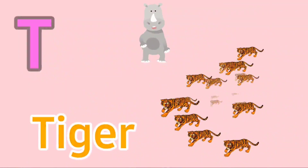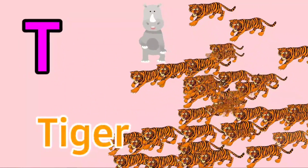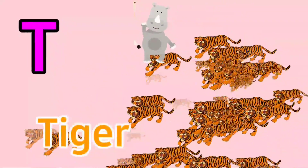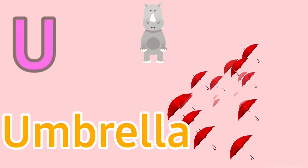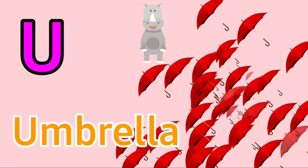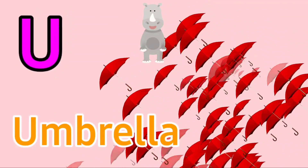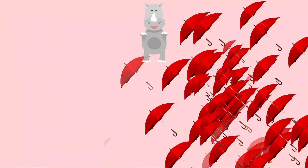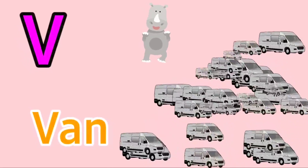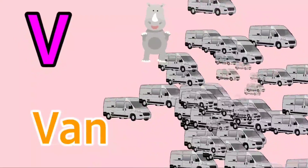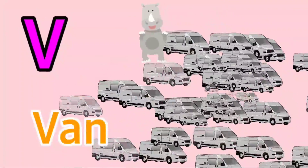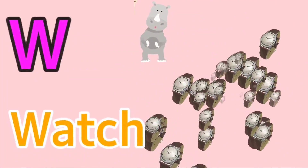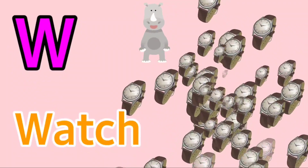T for Tiger, U for Umbrella, V for Van, W for Watch.